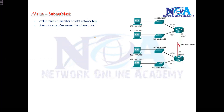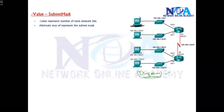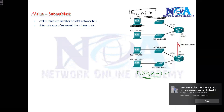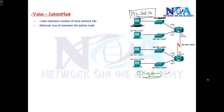In production scenarios, you will see some kind of diagrams in the documentation. In those diagrams, you will see IP addresses — for example, on this PC there is an IP address like 192.168.1.10 — but sometimes only the IP address is written and the subnet mask is not given.